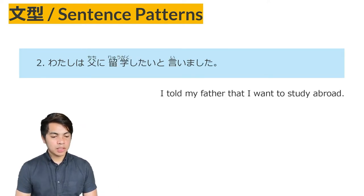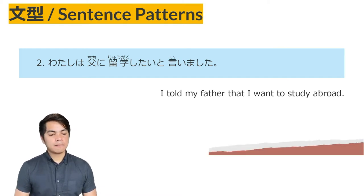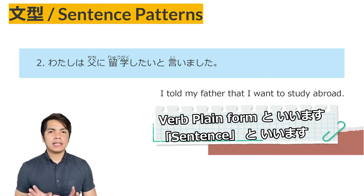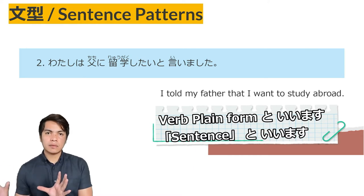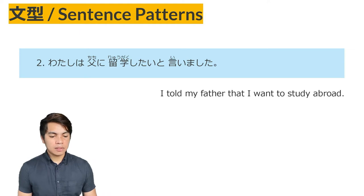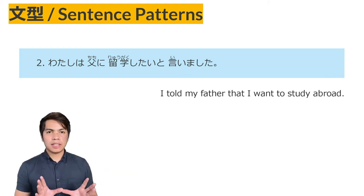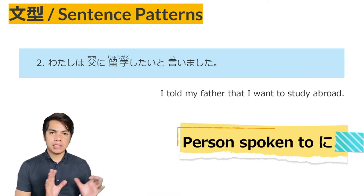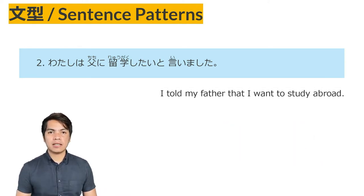Sentence Pattern No. 2. The pattern in this sentence is verb plain form to omoimasu, and sentence to iimashita. So 'to iimashita' means 'I said.' So what you will say — the exact sentence or exact word — plus iimashita. For example: I told my father I want to study abroad. Ryuugaku shimasu means to study abroad. The particle ni in this sentence is used as a marker indicating the person spoken to. So 'chichi ni' means 'I told my father.' Then 'ryuugaku shitai,' I said I want to study abroad. To iimashita.